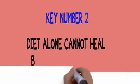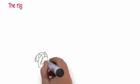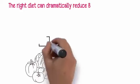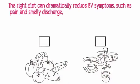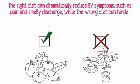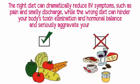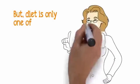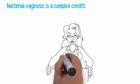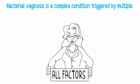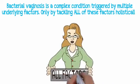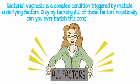Key number two: diet alone cannot heal bacterial vaginosis. The right diet can dramatically reduce BV symptoms such as pain and smelly discharge, while the wrong diet can hinder your body's toxin elimination and hormonal balance. But diet is only one of the factors involved. Bacterial vaginosis is a complex condition triggered by multiple underlying factors. Only by tackling all of these factors holistically can you ever banish this condition for good.